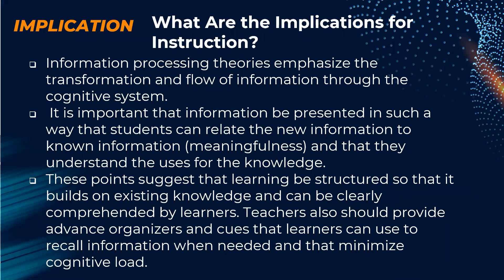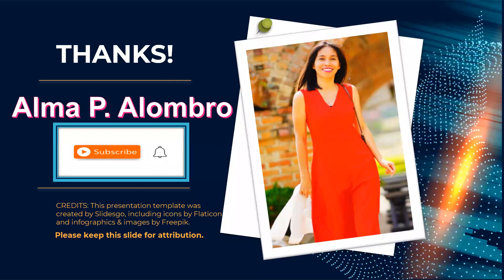What are the implications for instruction? Information processing theories emphasize the transformation and flow of information through the cognitive system. It is important that information be presented so that students can relate new information to known information — this is meaningfulness — and that they understand the uses for knowledge. Learning should be structured so that it builds on existing knowledge and can be clearly comprehended. Teachers should also provide advanced organizers and cues that learners can use to recall information when needed, minimizing cognitive load.